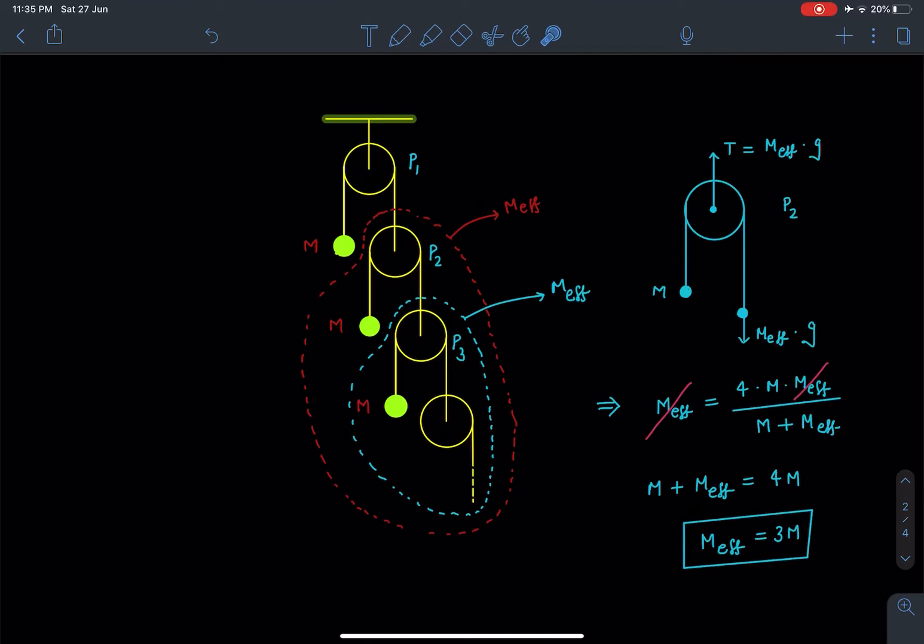If you look at pulley P2 in the sideways diagram, we can see on this pulley one side there is mass M hanging and the other side there is mass M_eff hanging. This mass also at the connecting top is going to be M_eff·g.